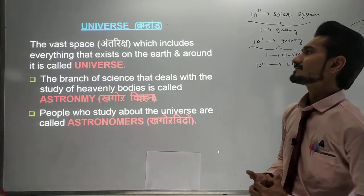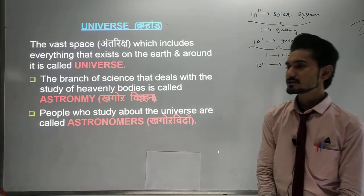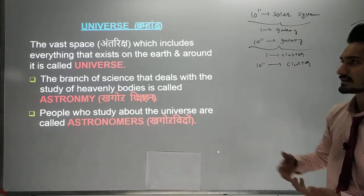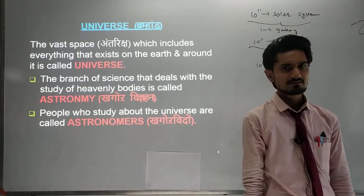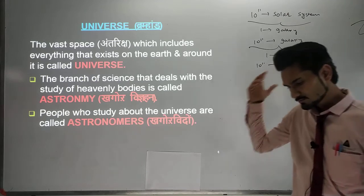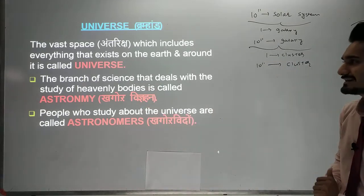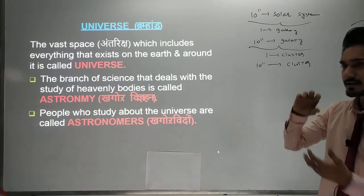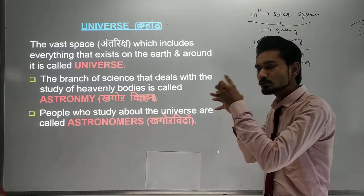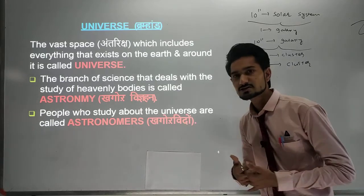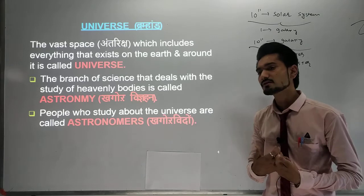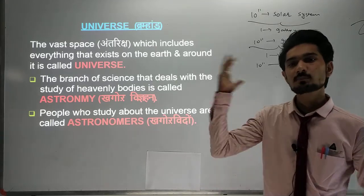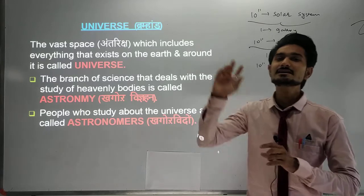So what can we say about the universe? Generally, the vast space which includes everything that exists on the earth and around it is called the universe — everything around us. The branch of science that deals with the study of heavenly bodies — bodies present in space — is called astronomy. Have you ever heard the word astronomy, or astronomer, or astrologer?